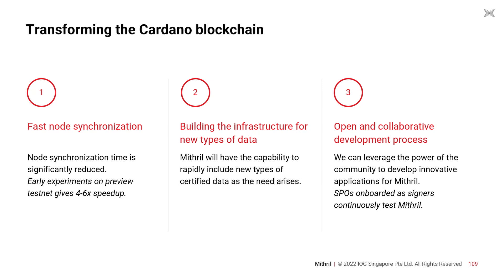Mithril is transforming the Cardano blockchain. First, we can have fast node synchronization — the synchronization time of the Cardano node is significantly reduced. On the preview network, we made some early experiments and noticed a four to six times speedup in synchronization time. In a few minutes I'm going to demonstrate a video in which you will see the results on the mainnet, and they are even more impressive than that.